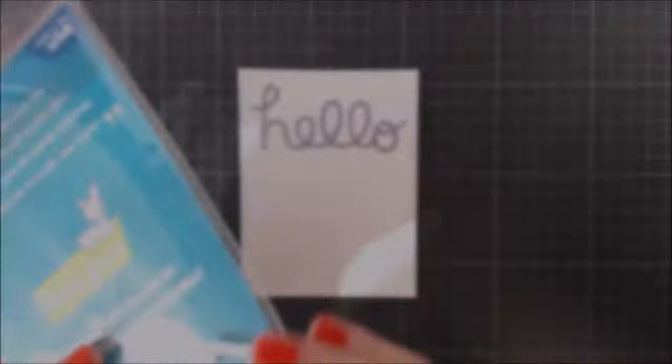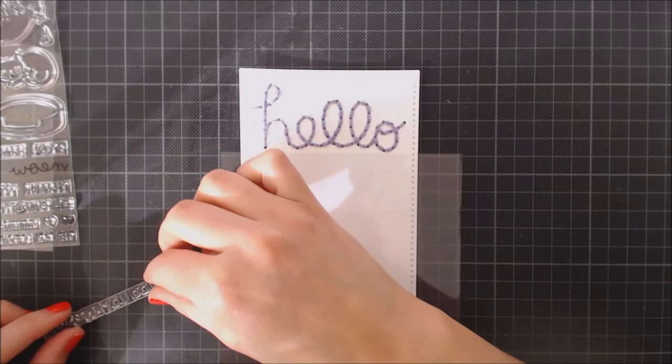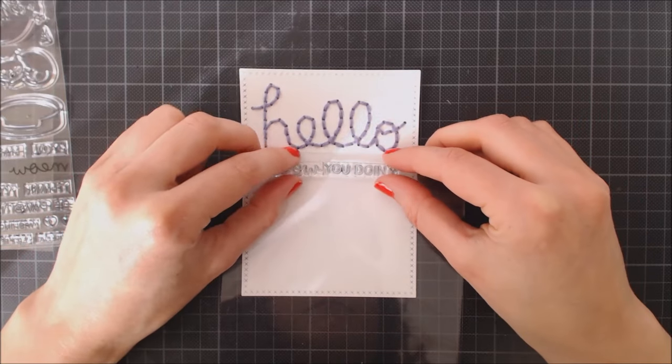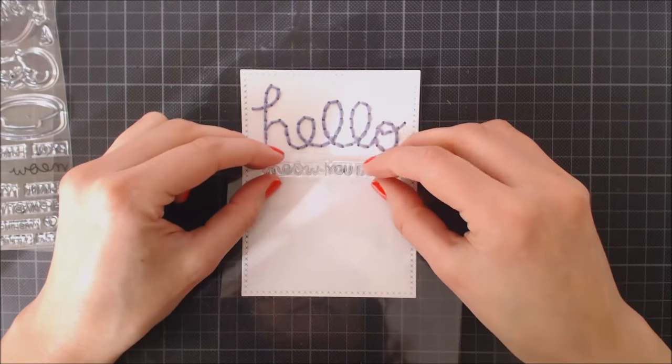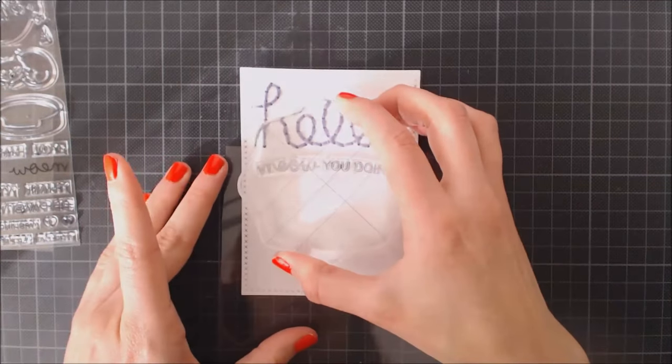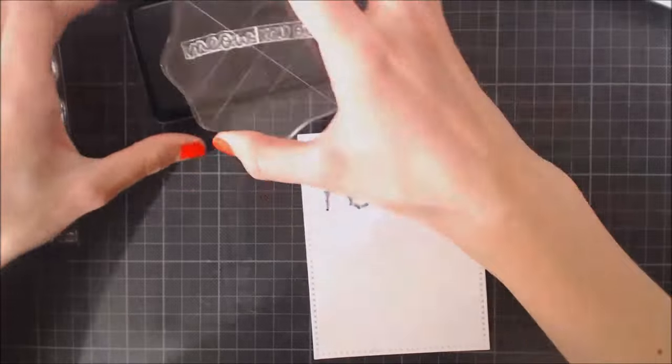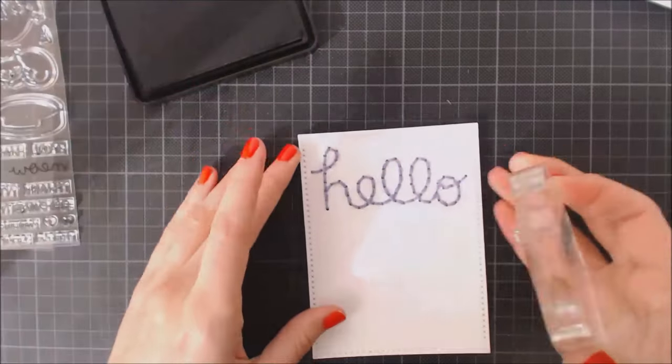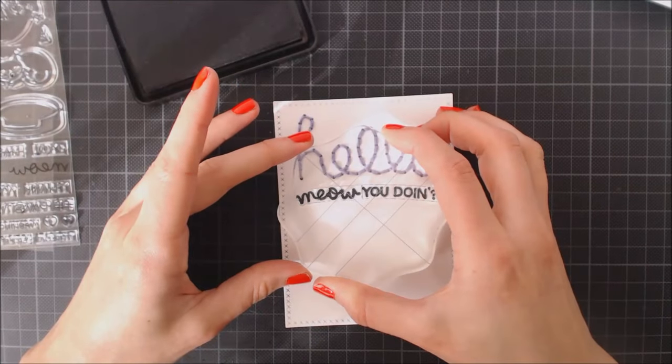Yarn totally makes me think of kitties, so I'm using this meow you doing set on my card. I'm using a piece of acetate to help me curve the sentiment a bit, then I'm picking it with my acrylic block and stamping it using Lawn Fawn Jet Black ink.